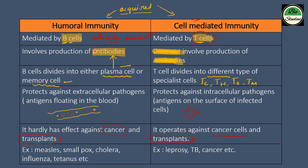Humoral immunity mainly involves B cells and antibodies, while cell-mediated immunity involves different types of T cells. Importantly, cancerous cells can be destroyed by cell-mediated immunity. For a quick reference on the differences between humoral and cell-mediated immunity, refer to the tabular column. Thank you for watching, and see you in the next video.